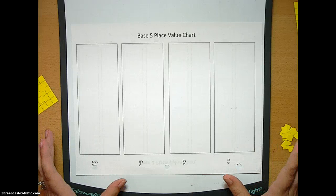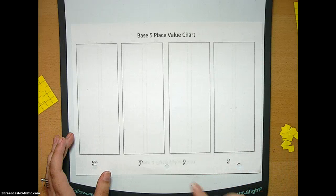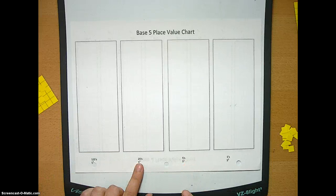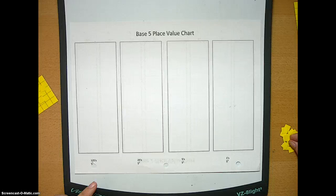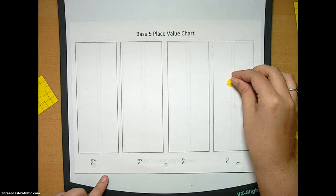once again, our place five value chart, we have our ones, our fives, 25s, and our 125s. And if you don't know what each of those pieces look like, I'm just going to go ahead and show you.